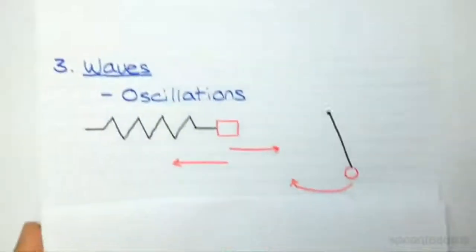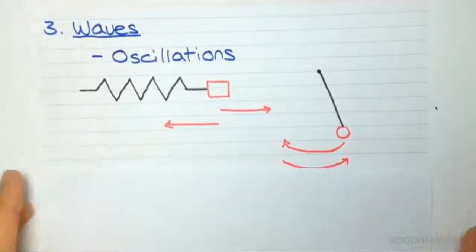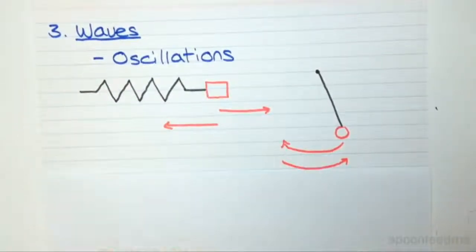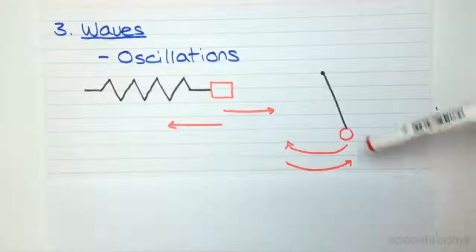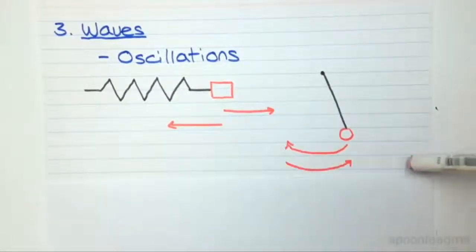That's thermal physics. The final topic in the introductory physics course is waves. We first look at oscillatory motions, which is essentially repetitive motions. If you imagine this spring bouncing backwards and forwards, or this pendulum swinging backwards and forwards.